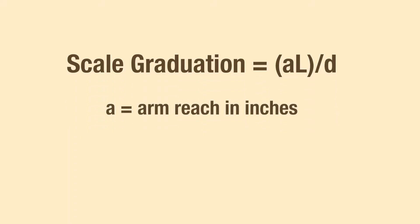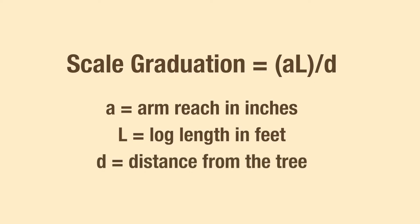Where A equals arm reach in inches, L is log length in feet, and D is your distance from the tree, either 66 feet or 99 feet.